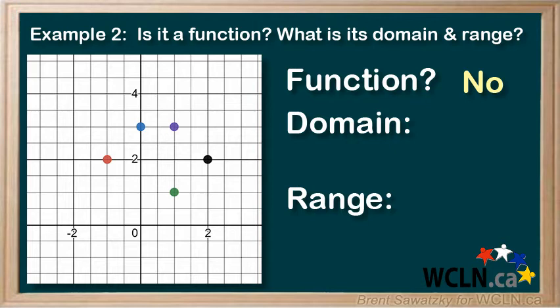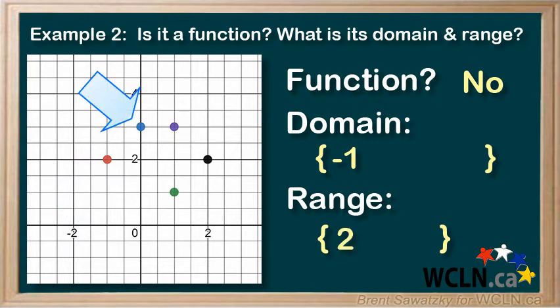So to define the domain and range, we'll need to identify the exact x values and the exact y values where these points sit. Then we can include them in a list that we'll surround with these curly brackets. Let's begin. This point is at x equals negative 1 and y equals plus 2. The x goes into the domain list and the y goes into the range list.